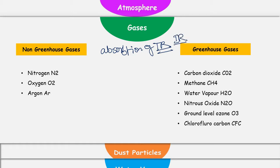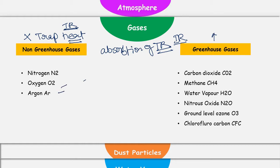Because of that, the global warming problem is happening. The basic difference between non-greenhouse gases and greenhouse gases is the absorption of terrestrial radiation — or infrared radiation emitted by Earth — or the trapping of heat. Non-greenhouse gases cannot trap heat; they are transparent for terrestrial radiation coming from Earth. Classical examples of non-greenhouse gases are nitrogen, oxygen, and argon. Greenhouse gases are gases which can absorb infrared radiation emitted by Earth — examples are carbon dioxide, methane, water vapor, nitrous oxide, ground-level ozone, and chlorofluorocarbon.